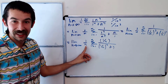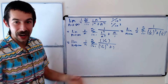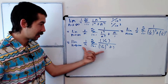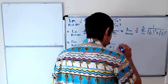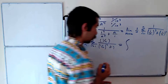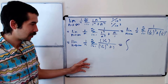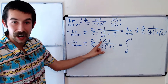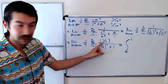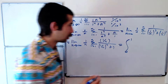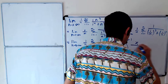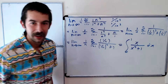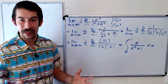So what is this? 1 over n is Δx, and i/n would be the right endpoint if we had a Riemann sum. This is exactly an integral — the integral from 0 to 1. Since i/n corresponds to x, the integrand is x over x⁴ plus 1.